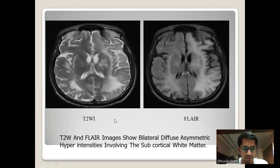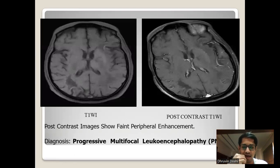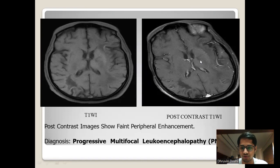On T2 and FLAIR, we can see bilateral diffuse asymmetrical hyperintensities involving the subcortical white matter. On post-contrast studies, there is faint peripheral enhancement. With the clinical features and imaging findings, the diagnosis is progressive multifocal leukoencephalopathy. On the post-contrast T1 image there is mild peripheral enhancement, and combined with clinical features, this confirms the diagnosis.